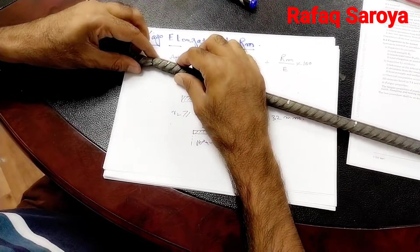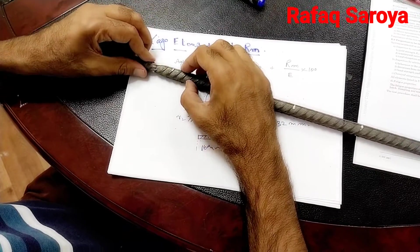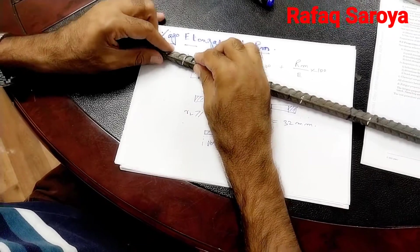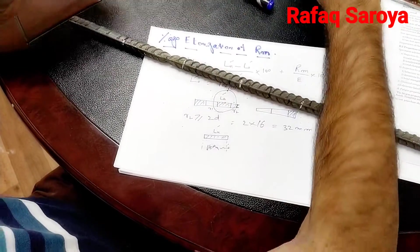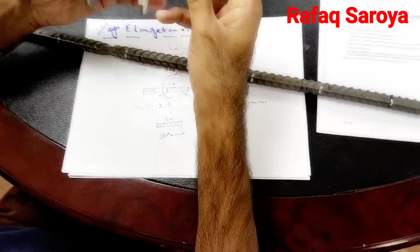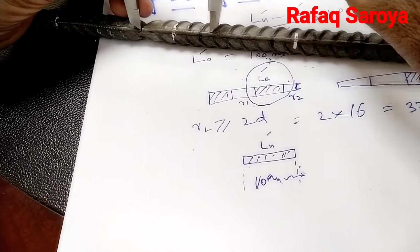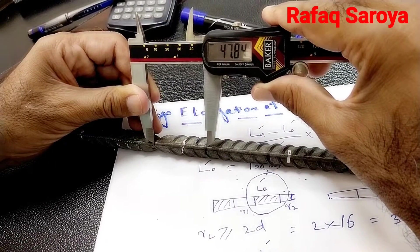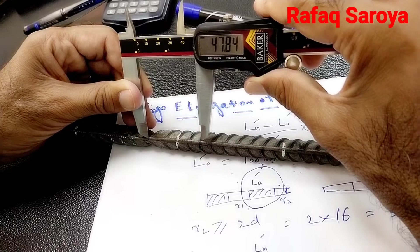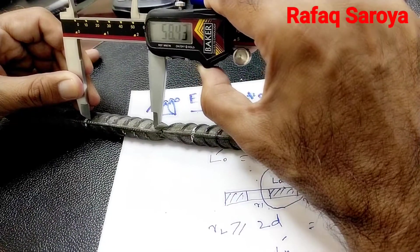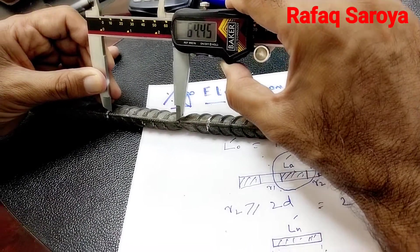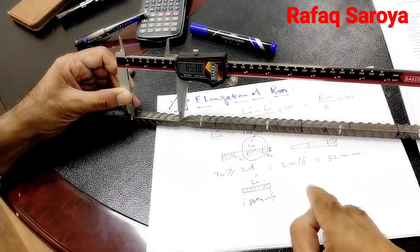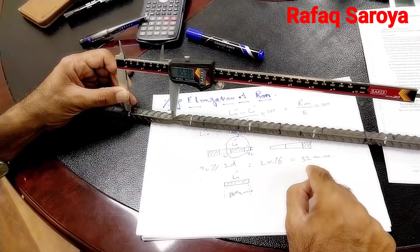So this is a bar which has been broken down at this point. Here we are going to measure this distance. First of all, we will see that this distance is more than 32 mm and it is near to the fracture. Because this is away from the fracture, we are taking the point into consideration which is near the fracture.